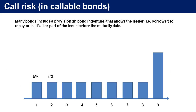The next type of risk, related to reinvestment risk, is called call risk, and it occurs in callable bonds. Many bonds include a provision in the bond indenture document that allows the issuer or borrower to repay or call all or part of the issue before the maturity date. The issuer usually retains this right in order to have flexibility to refinance the bond in the future if the market interest rate drops below the coupon rate. But from the investor's perspective, there are three key disadvantages to this.